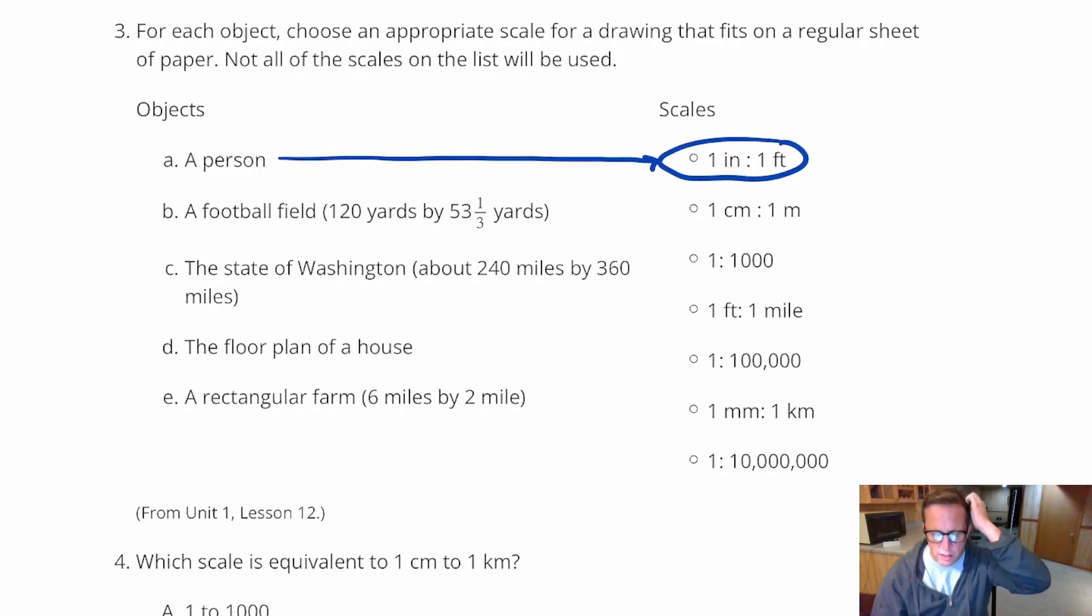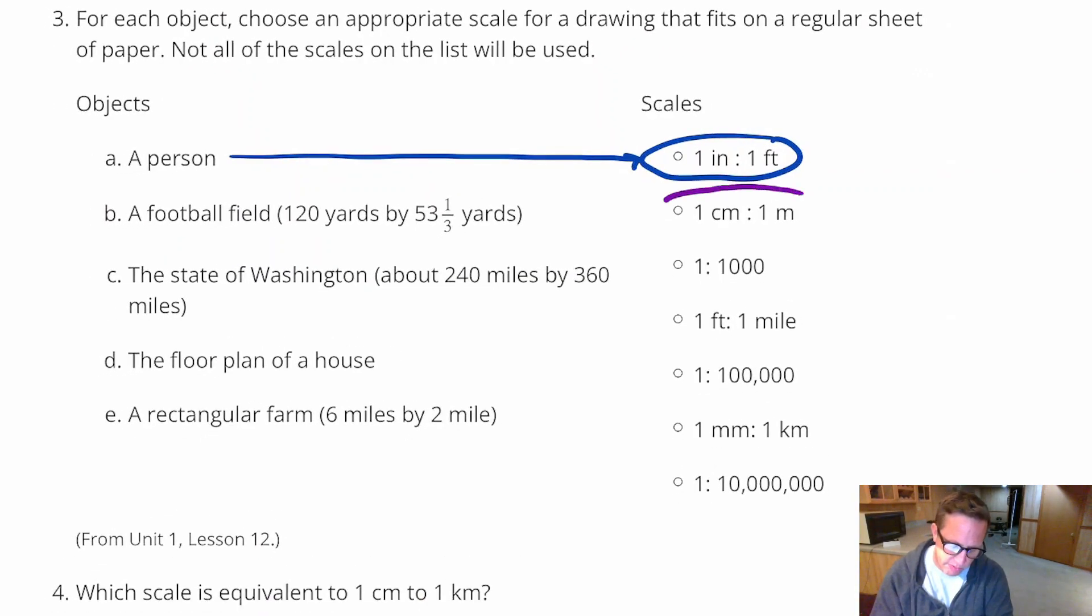I'm going to go down to D. The floor plan of a house. The thing that kind of sticks out for me, for this, for the floor plan of the house, is this one. I'm going to use some deductive reasoning here, but one centimeter equaling one meter in the house would make sense. Because one meter is about three feet. And let's say the room is 12 feet wide or something. That's easily going to fit on a piece of paper. That would be 12 centimeters.